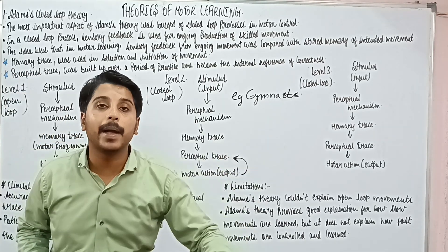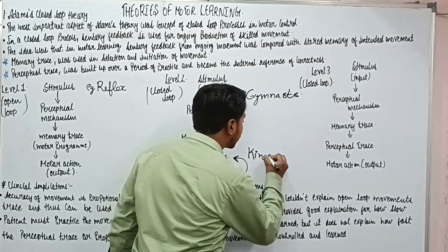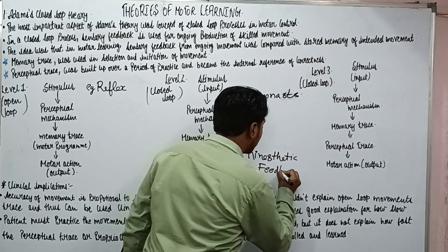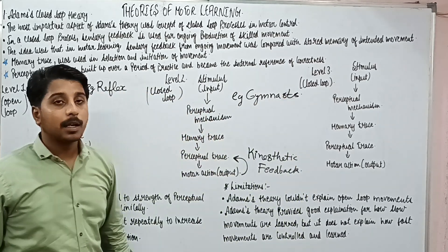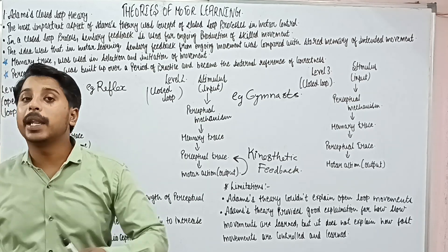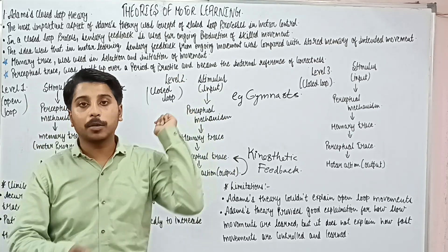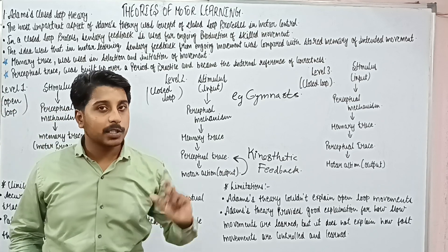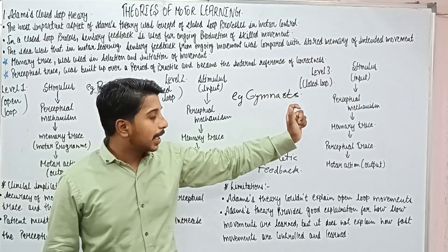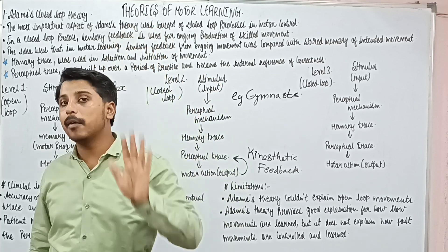The feedback here is kinesthetic feedback — that is, joint sense. Now for the last example: I am playing badminton, and I have played a shot. The shuttle is going into the net as it comes toward me. Next time, I will think that I need to increase the elevation of my shoulder so that my shuttle will clear the net.